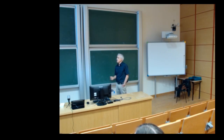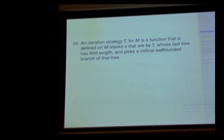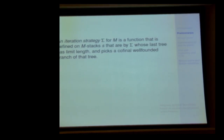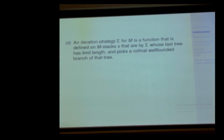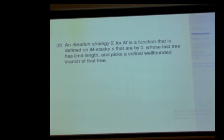What's an iteration strategy? It's a function defined on stacks of trees that are already by the strategy, such that the last tree in the stack has limit length. What it does is pick a branch of that tree from which you could continue your process. So iteration strategies pick branches of iteration trees at limit stages, with the obligation to stay in the category of well-founded models. You've got to pick a branch such that the direct limit along that branch is well-founded. If you have a strategy for always doing that, then your M is good — it has an iteration strategy, enabling you to compare yourself with other such models.